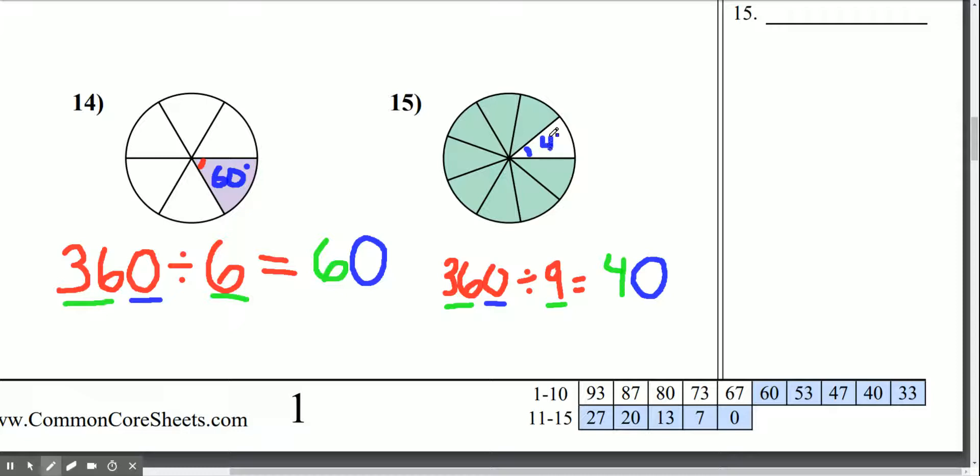So 40 is the number of degrees of each pie piece. To figure out the shaded ones, I'm going to add 40 degrees 8 times, or I could do 40 degrees times 8.